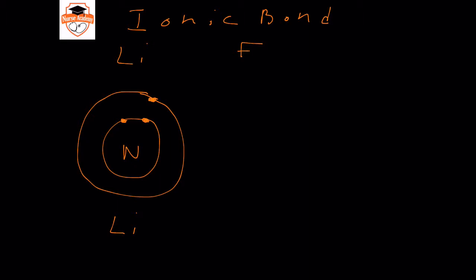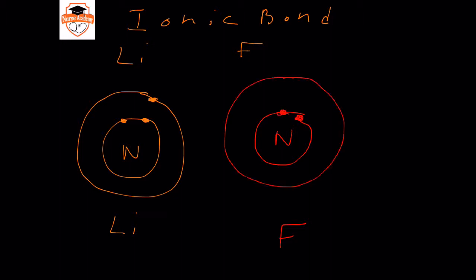So lithium is going to preferentially lose an electron to form a lithium plus one, but right now what we're looking at is the neutral atom. Next we would look at fluorine, which has its nucleus. Fluorine has an atomic number of nine. In its first energy level, just like lithium, it's going to have two electrons. But in its second energy level, it's going to have seven electrons, and these are the valence electrons that fluorine has.